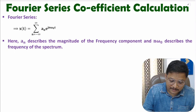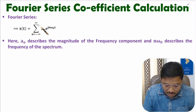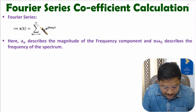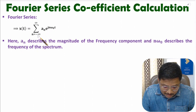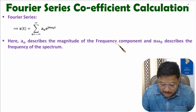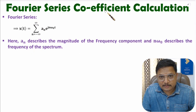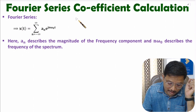The Fourier series equation is: x(t) equals summation where n ranges from minus infinite to plus infinite of a(n) into e to the power jn omega naught t. Here a(n) describes the magnitude of a frequency component, that is the Fourier series coefficient. In this video, I will derive the equation of a(n).